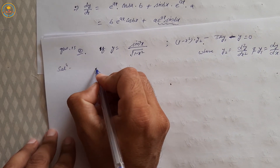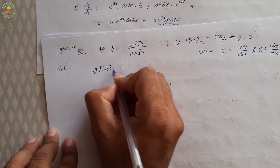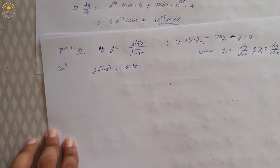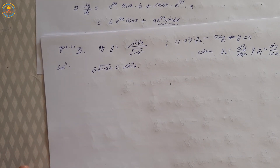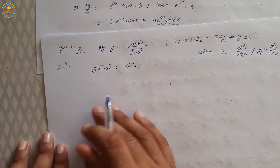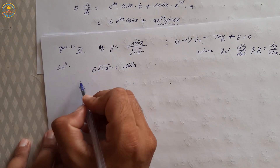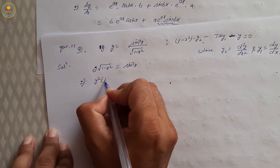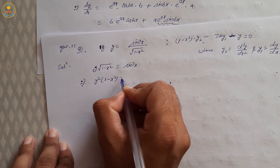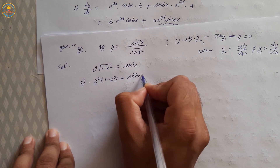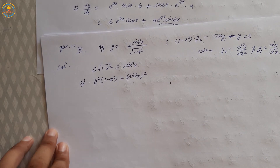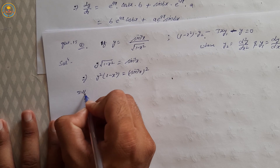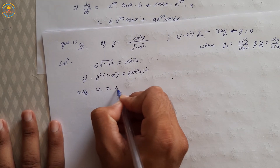Cross multiply: y · √(1 − x²) = sin⁻¹x. Squaring on both sides: y² · (1 − x²) = (sin⁻¹x)². Now differentiate with respect to x.